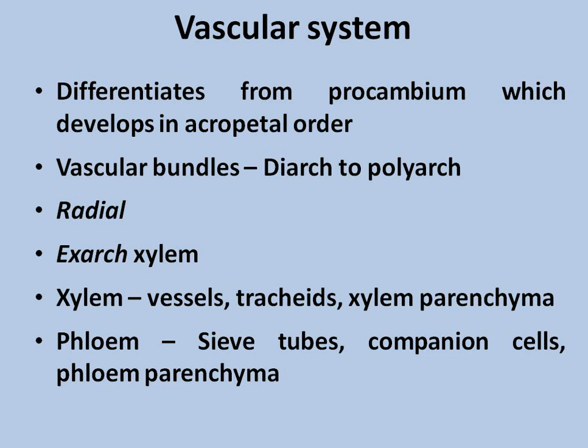A key feature is that the vascular bundles in roots are radial, meaning xylem and phloem are found on separate radii. The xylem in the vascular bundle is exarch in nature — that is, the protoxylem is toward the periphery. When protoxylem is peripheral, that type of xylem condition is called exarch. Xylem is usually composed of three components: vessels, tracheids, and xylem parenchyma, as well as xylem fibres. So root vascular system is radial and exarch.